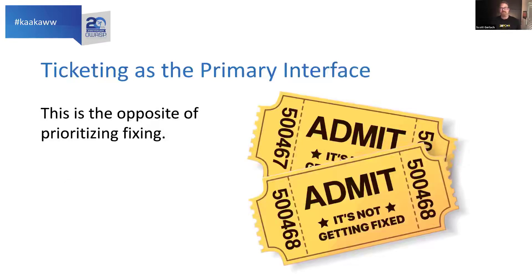Another problem is ticketing as the primary interface. If you're evaluating a security tool and your first question is 'can I push all these issues to JIRA,' you are not thinking about prioritizing fixing at all — you are thinking about documenting. That's the wrong way to help engineering prioritize. If you're not getting closer to in-context, in-the-moment delivery of findings as people are writing and testing code in CI/CD, you're getting farther from context, and it makes it harder and more expensive to fix and prioritize those things.